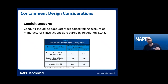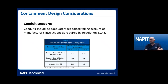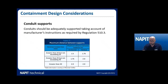We also need to look at conduit supports, which were mentioned in the requirements of Chapter 52. We often turn to manufacturer's requirements to meet regulation 510.3. For example, for conduit sizes between 16 and 25mm, the maximum horizontal support spacing is 1.5 metres. Remember these are maximum distances — you'd likely get some sag at 1.5m with a plastic conduit, so you'd probably want more supports than the maximum, but these are the manufacturer-supplied maximums for this particular conduit.